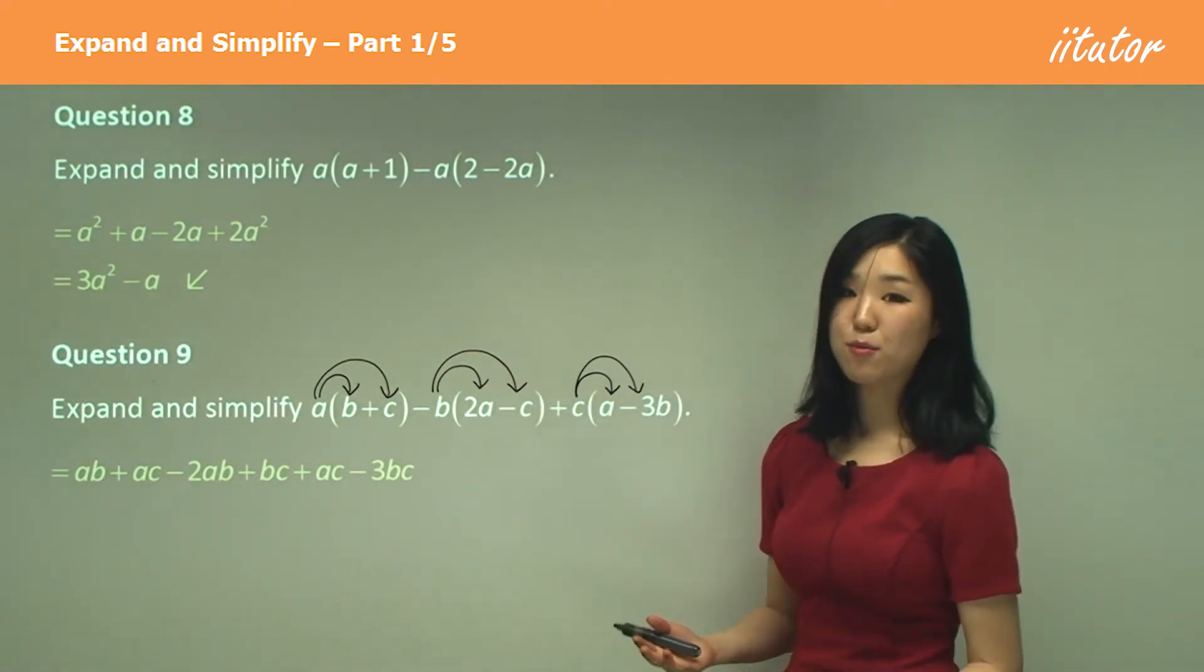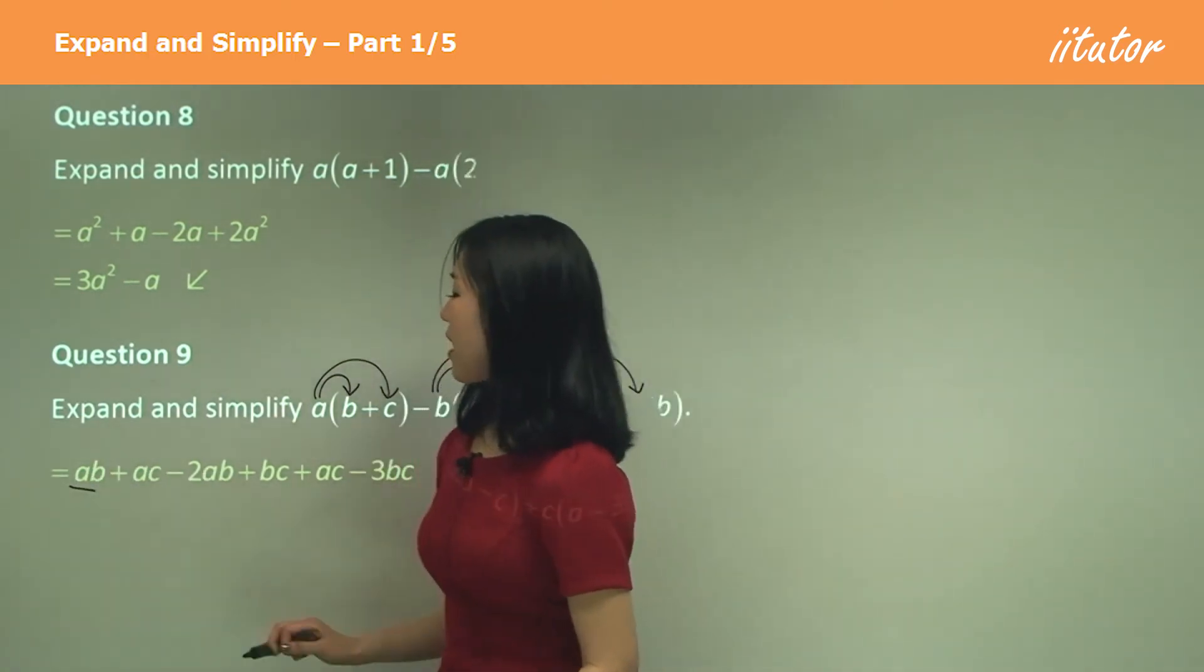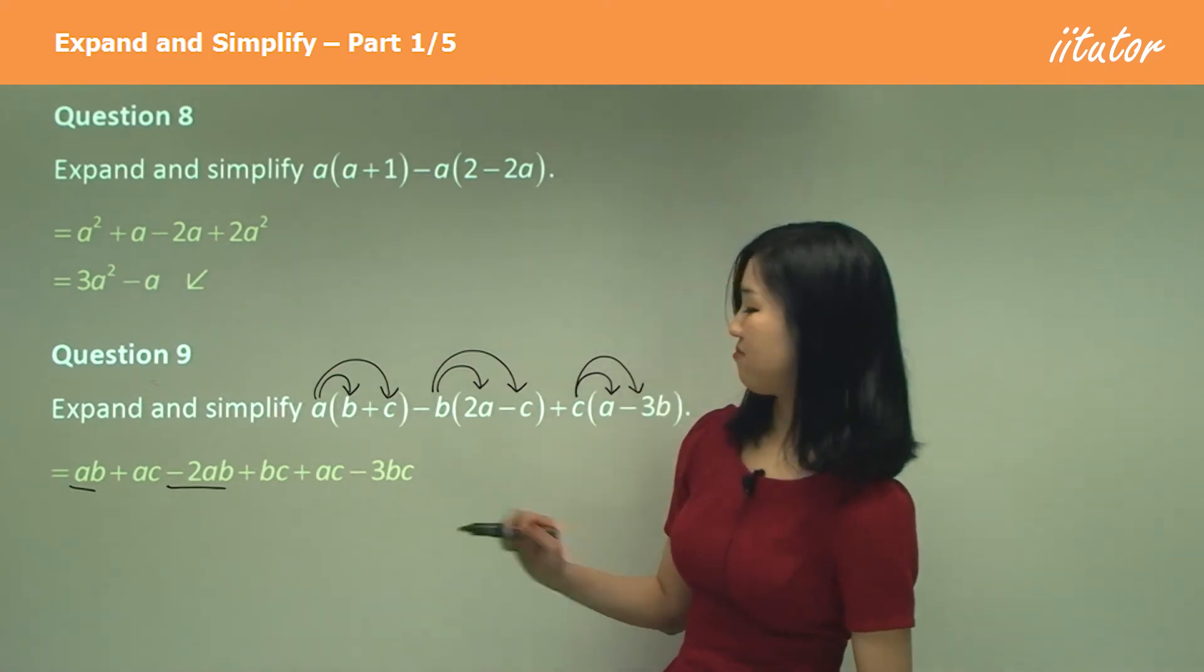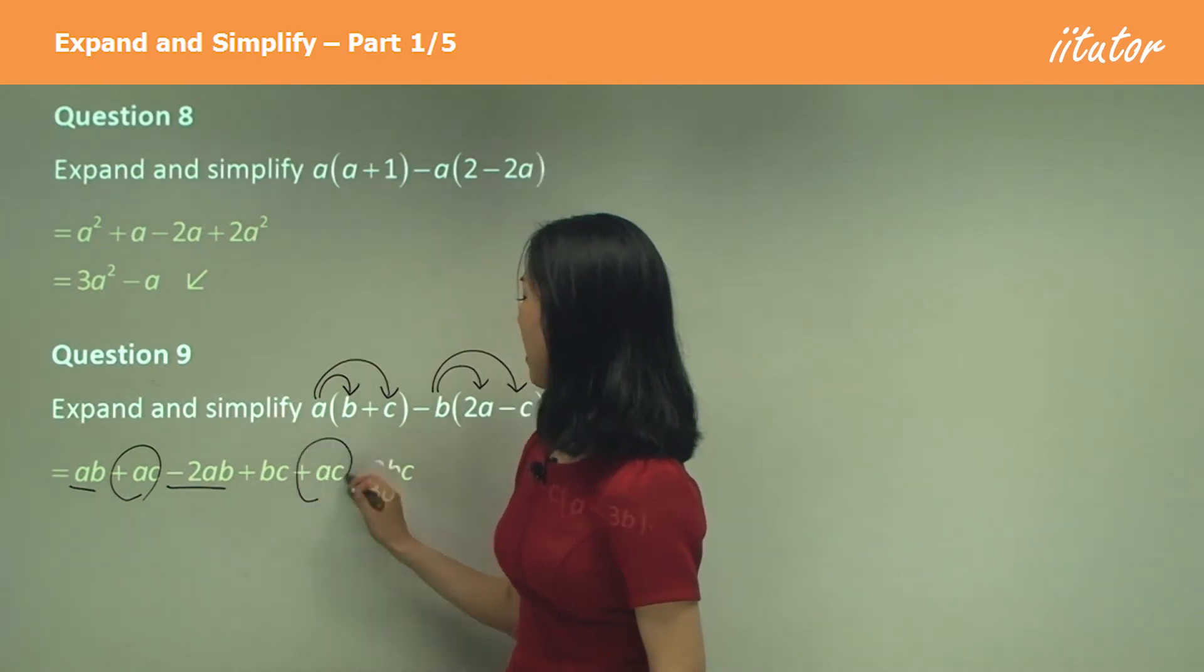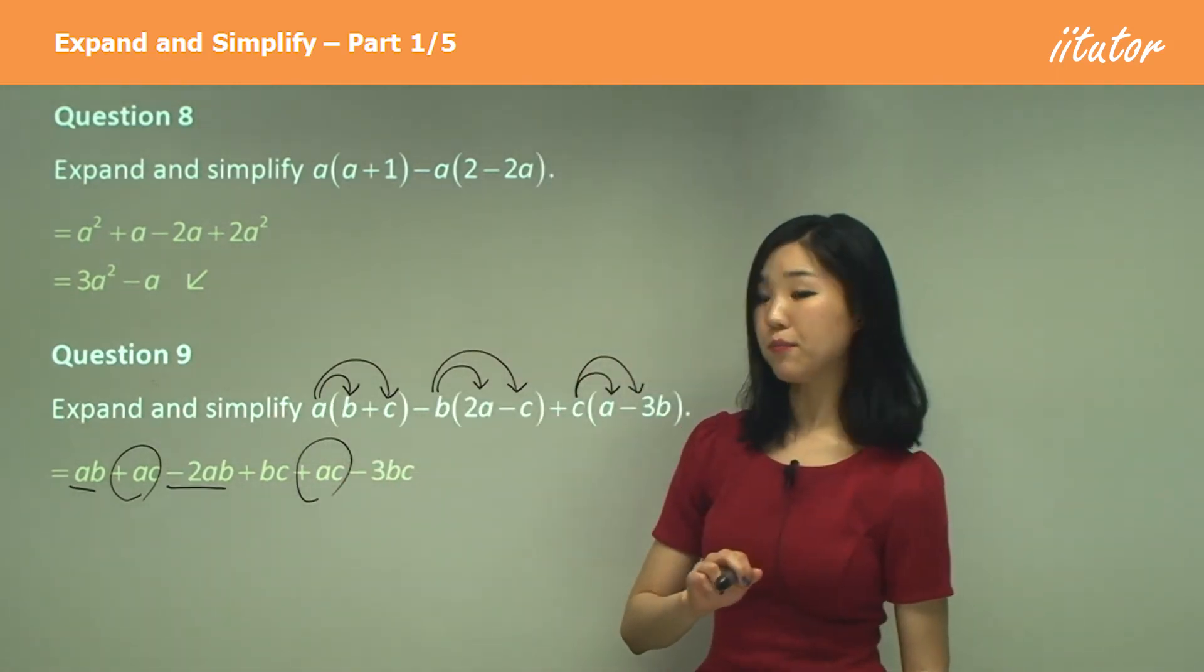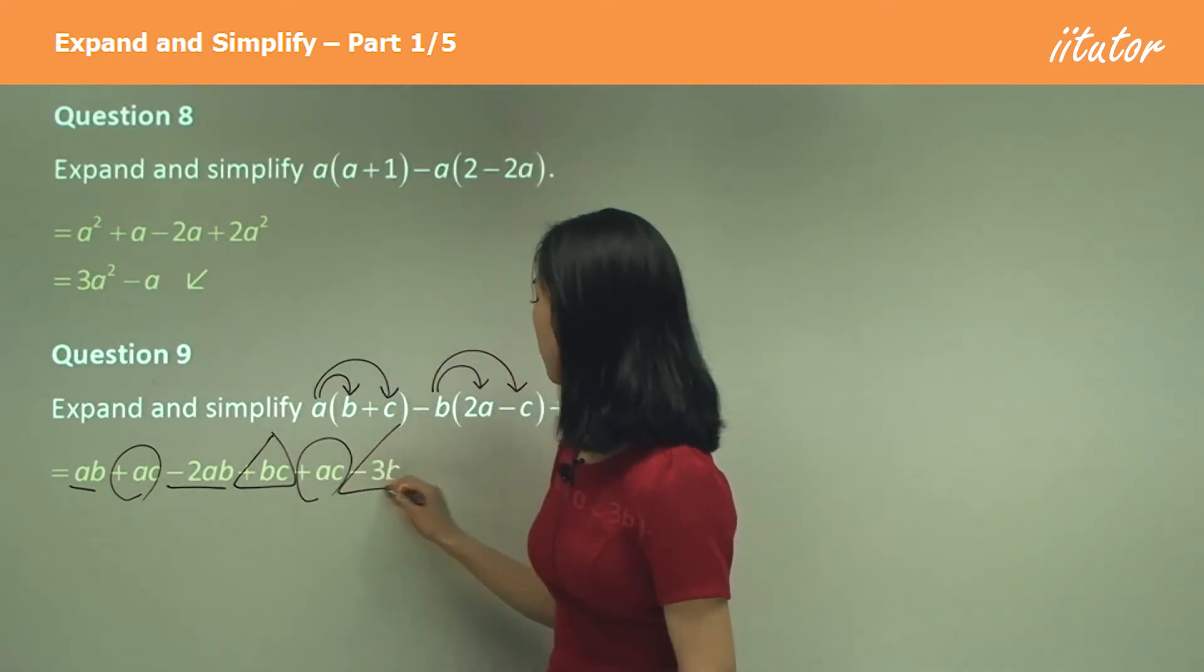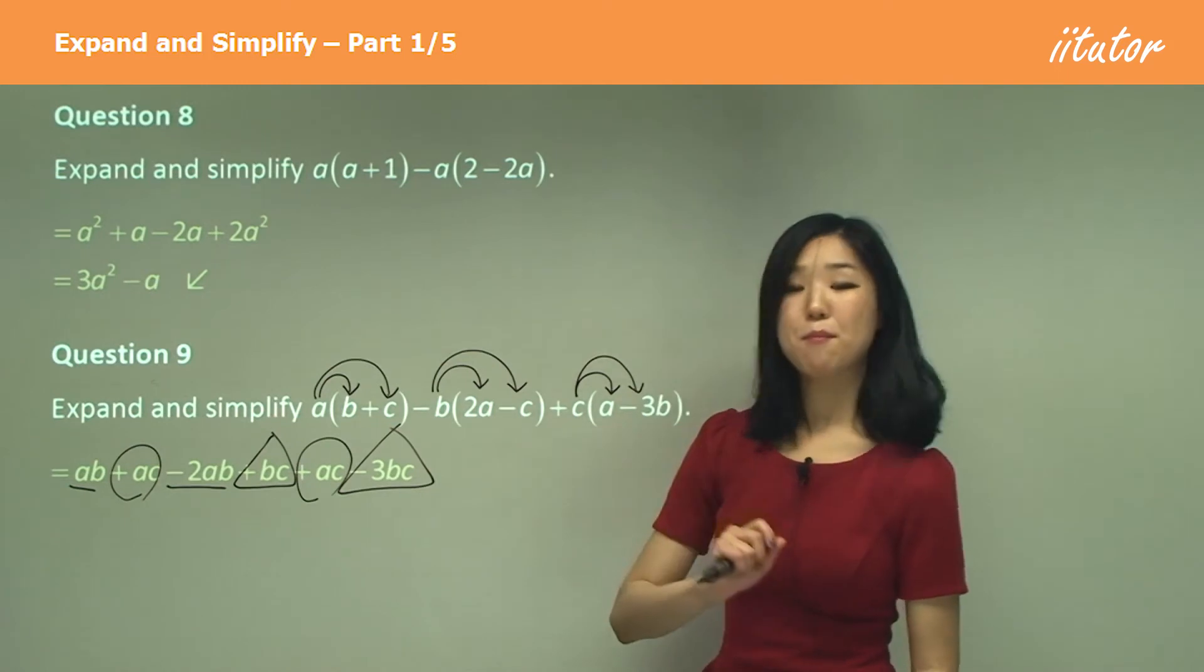So now we just gather our like terms to simplify. See how ab we've got ab there, we've got ab there. Any more ab's? That's it. Now here we've got ac and we've also got ac here, and we've got bc and we've also got bc there because that's 3bc. So I gathered up my like terms.